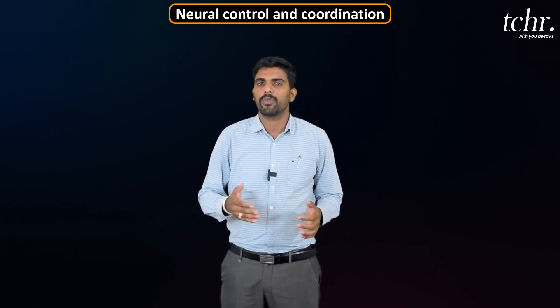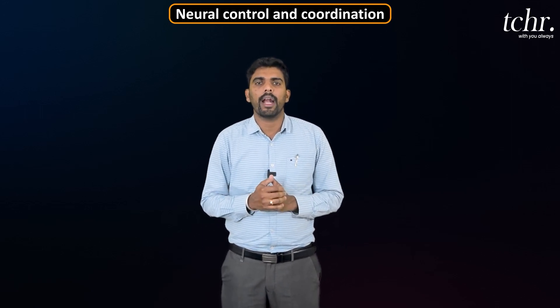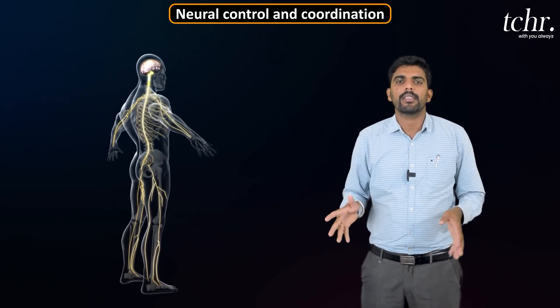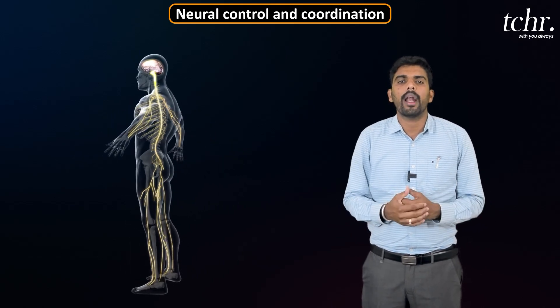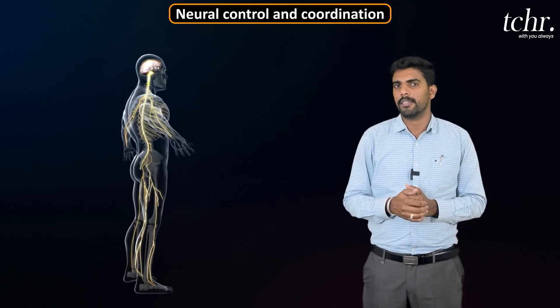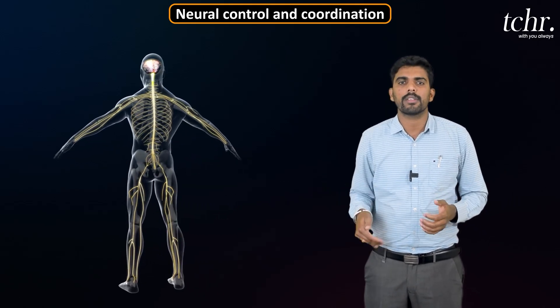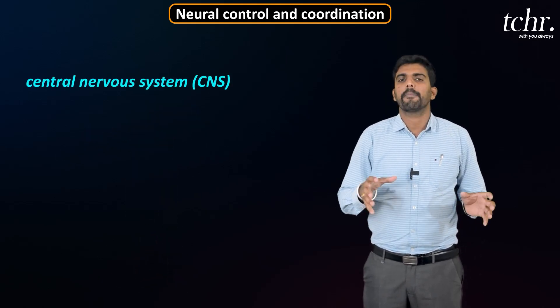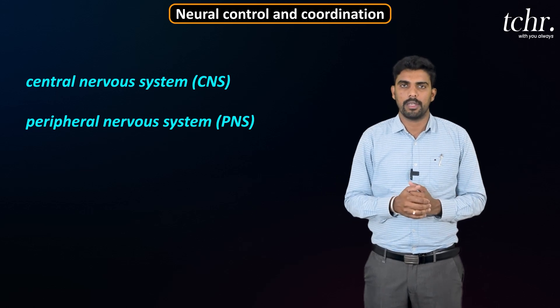I want to discuss the Neural Control and Coordination chapter, synapses, in the human physiology chapter. In this chapter, we will expect one or two questions in the CET exam. Neural Control and Coordination — the name indicates that the nervous system controls the activities of body organs and also coordinates two or more organ functions. The nervous system of human beings is mainly divided into the Central Nervous System (CNS) and Peripheral Nervous System (PNS).